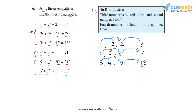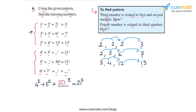Now let's use this pattern to complete the three statements. We have 4² + 5² + ?² = 21². The missing third number will be the product of 4 and 5, which is 20. So we get 4² + 5² + 20² = 21². The next statement is 5² + ?² + 30² = 31².